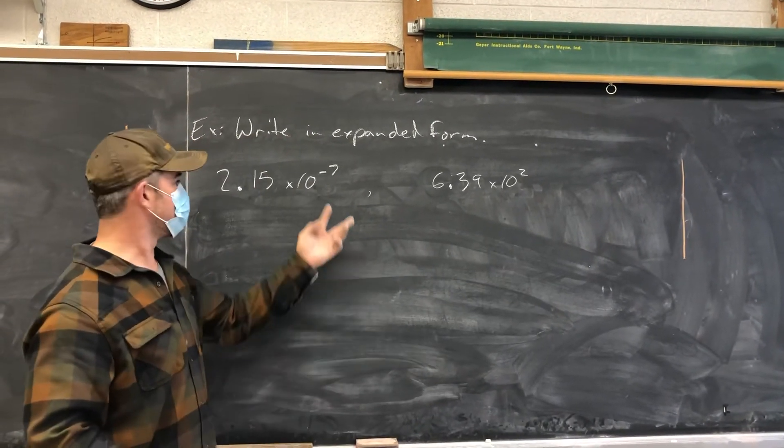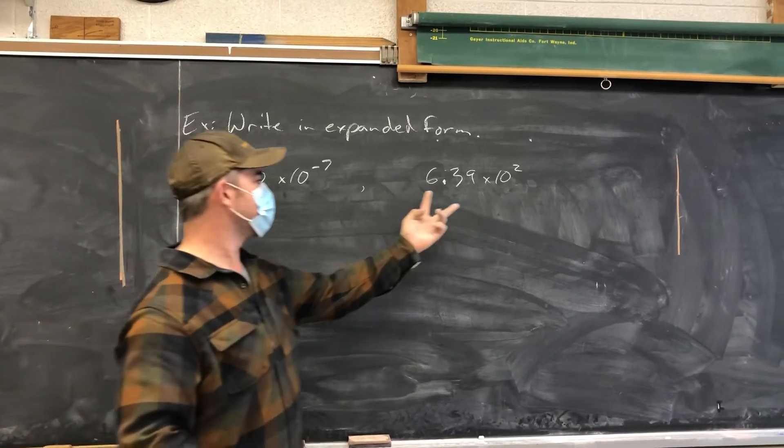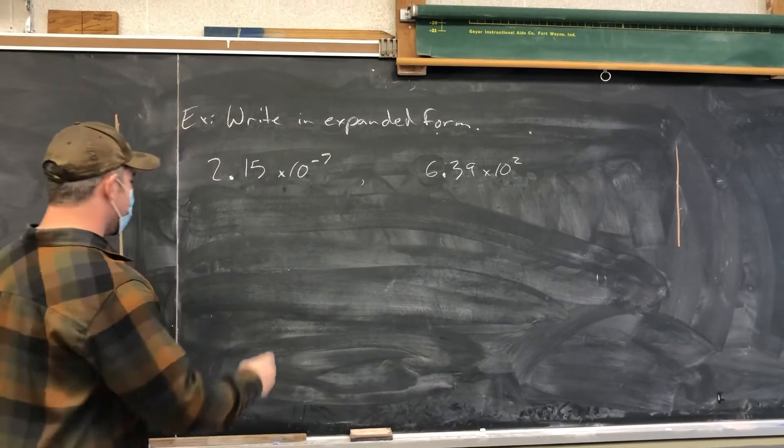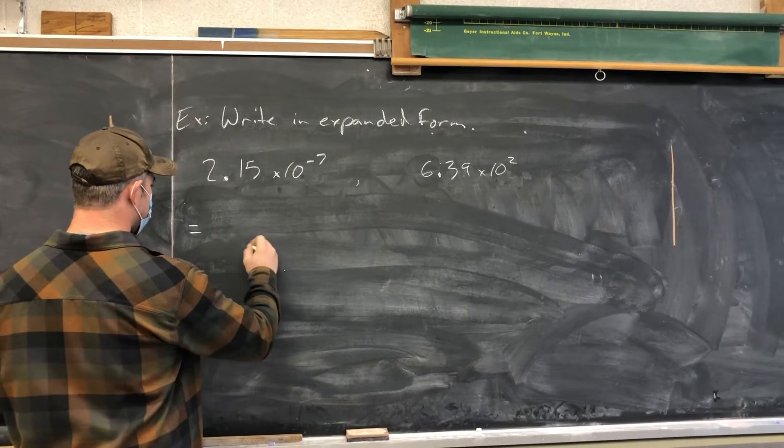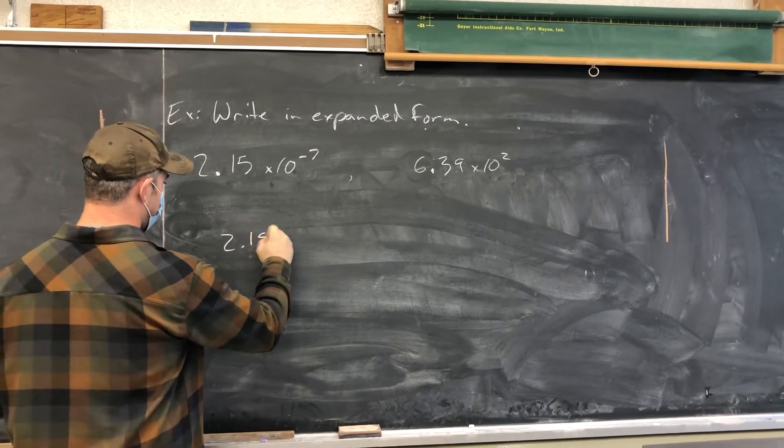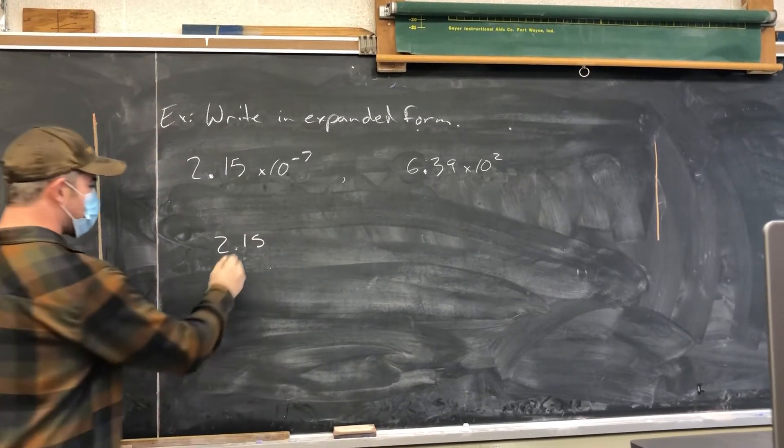Now I've got two examples, one with a negative set of exponents and one with a positive set of exponents. We're going to see how we deal with each of those two cases. I like to start off by writing down the number first, so I'm going to write down 2.15. So I'm writing down the value portion of the number.